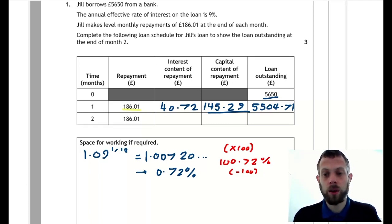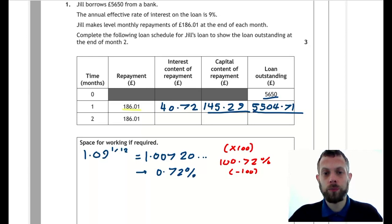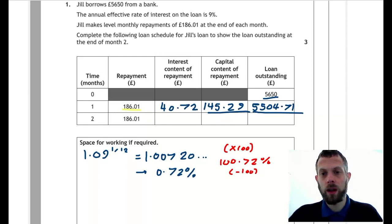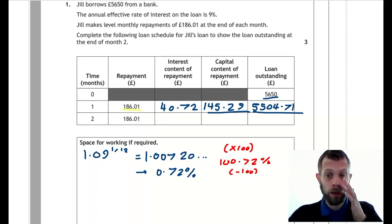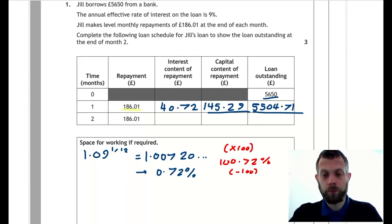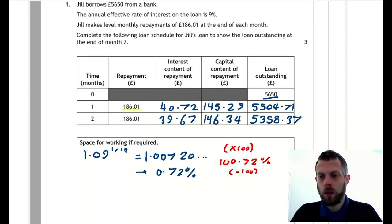Finally, for the second month, we do everything again. You take 0.72% of the loan amount, and then you take whatever you get here away from the repayment, and then take what you get here away from the £5,504.71. And when you do all of that, it will be these values.